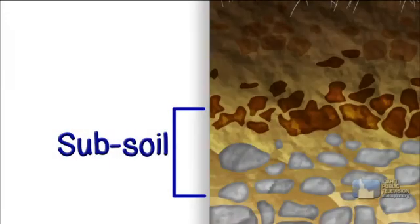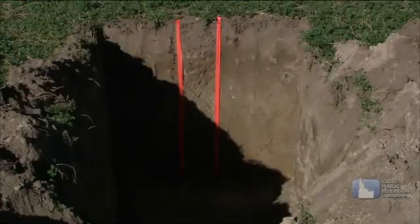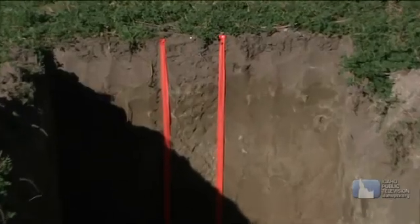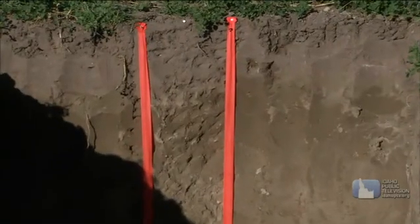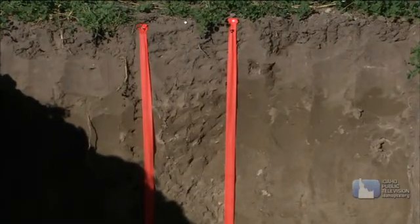Under topsoil is subsoil. It's from several inches to several feet thick. It looks lighter because it contains less humus. It's more tightly packed and has slightly bigger pieces of rock.